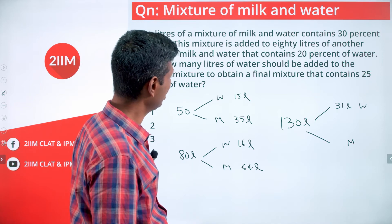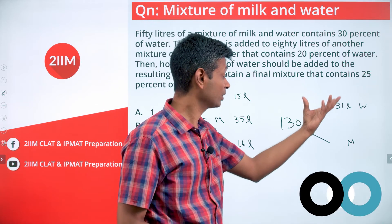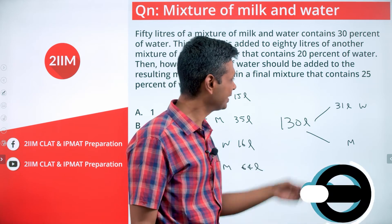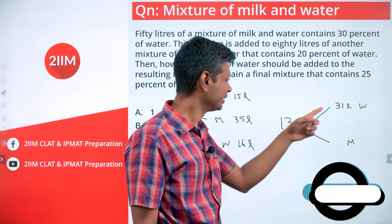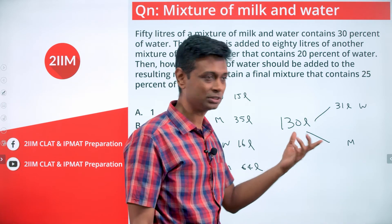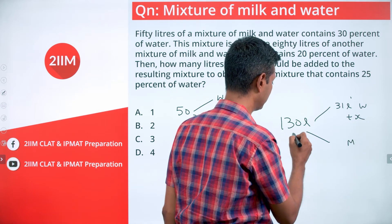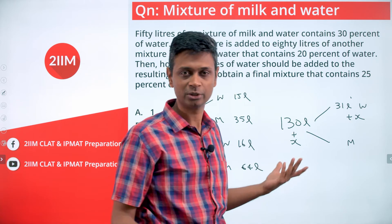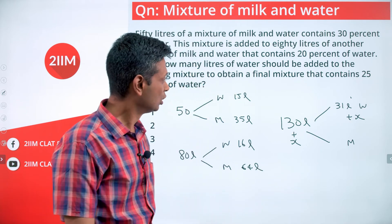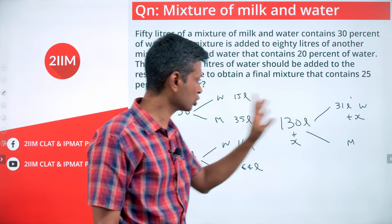How much should be added to obtain a final mixture that contains 25% of water? So we add something and then finally it should be 25%. 31 into 4 is 124, 32 into 4 is 128, 33 into 4 is 132. You add some x here, add the same x here because we're not adding any milk. 25% is 1/4th. If x is 2, it becomes 32, and 32 into 4 is 128. If x is 2 then 33, 33 into 4 is 132.